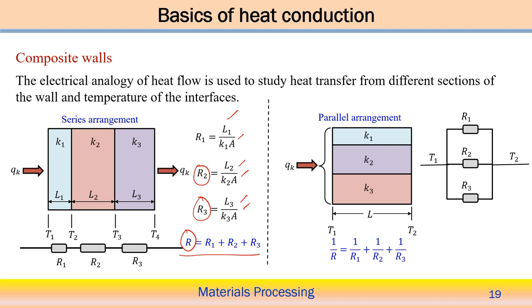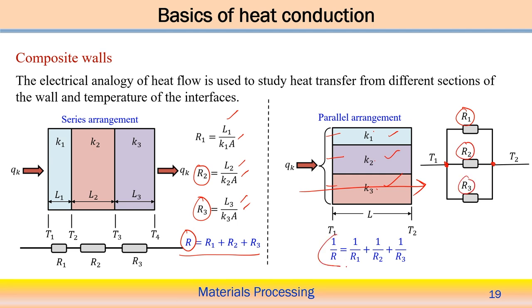Heat flow may also occur in a parallel arrangement. Suppose three different walls are arranged in parallel with thermal conductivities K1, K2, K3, and the same thickness L, with heat flow in the direction perpendicular to the wall thickness. Temperature T1 is on one side and T2 on the other. The thermal resistances R1, R2, and R3 are parallelly connected, so 1/R = 1/R1 + 1/R2 + 1/R3.